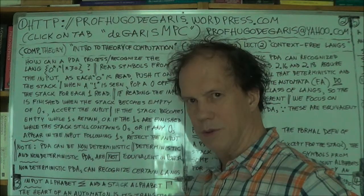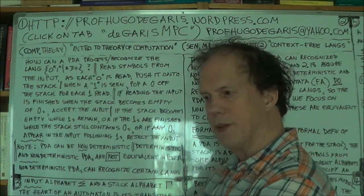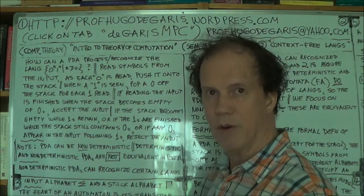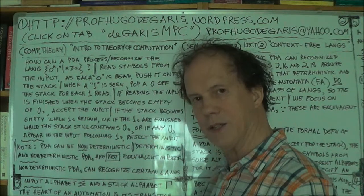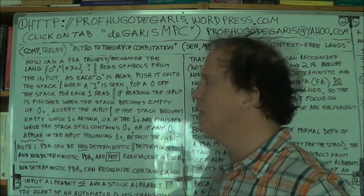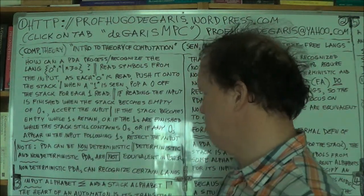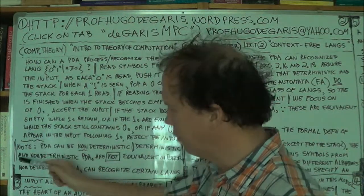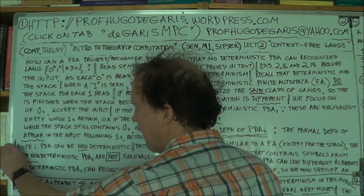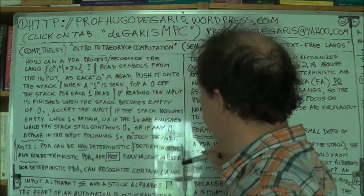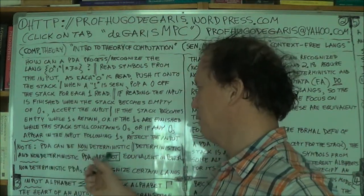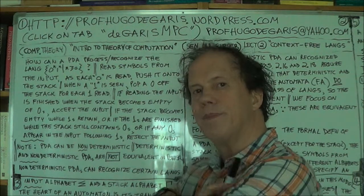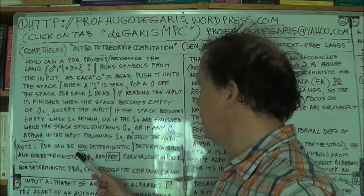This is a description of how you could use a PDA — our first example of how to actually use a PDA in processing. How can you actually detect, recognize a language, accept or reject strings of a certain kind? Now an important remark: there is a difference in power between a deterministic PDA and a non-deterministic PDA.